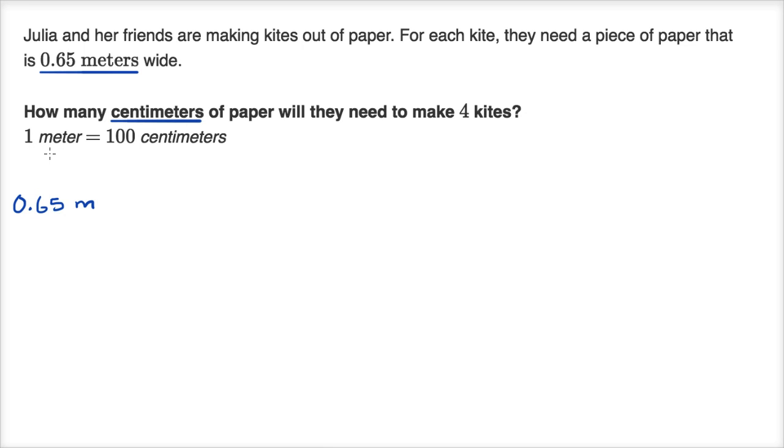To go from one to 0.65, you multiply by 0.65 on the meters. And so to go to 100 centimeters to the number of centimeters you'd need for the width of a kite, you'd similarly multiply by 0.65. Well, 65 hundredths times 100 is going to be 65 centimeters per kite. So this is 0.65 meters wide per kite. In centimeters, it is 65 centimeters.